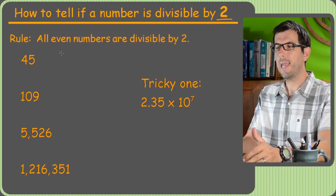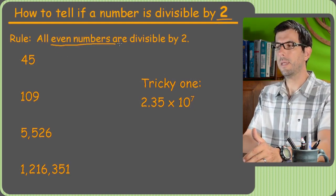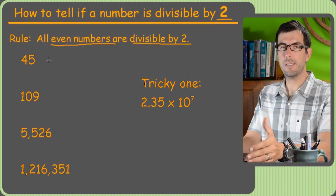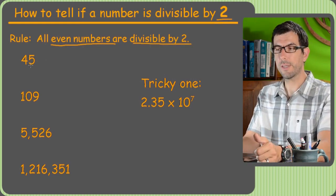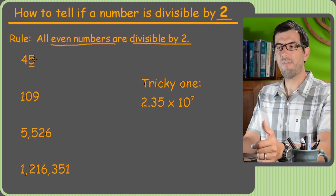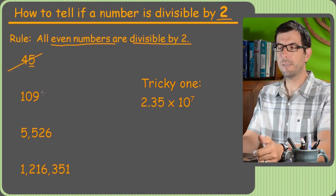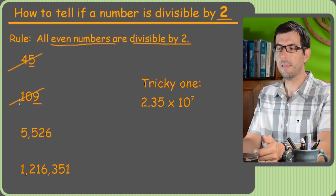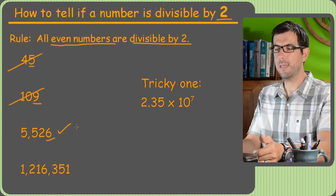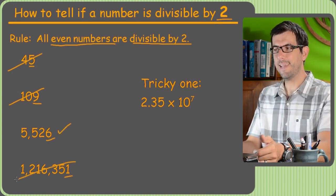Well, any even number is divisible by 2. So awesome, that's really easy. Even and odd, really easy to spot. You just look at the last digit. So because 5 is an odd number, this is not divisible by 2. 9 is odd. This is not divisible by 2. This is even, so it is. This is odd, so it's not.